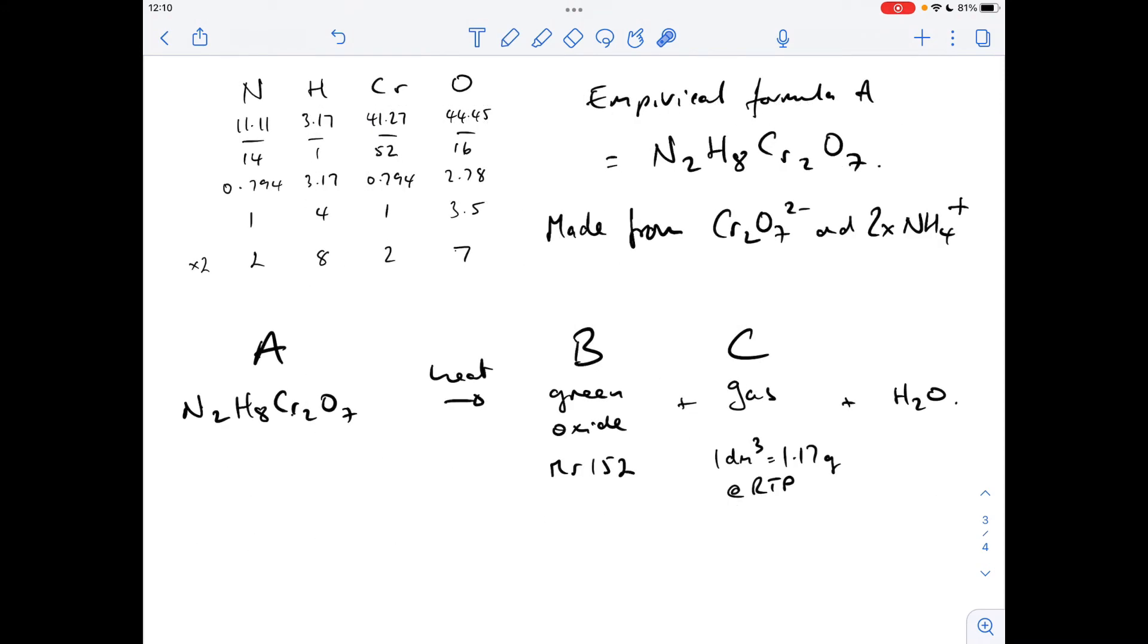So moving on to the rest of the question, so I've created like a little flow chart summarizing all the information we're given. So A has been heated, it's formed B, which is the green oxide with this MR, C, which is a gas, and we're told at room temperature and pressure, 1 dm³ has a mass of 1.17 grams, and it also makes H₂O.